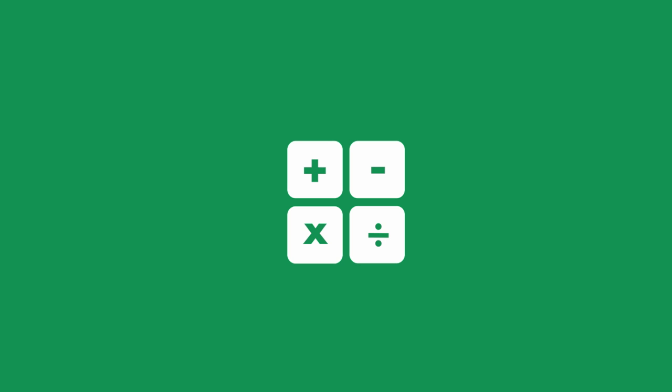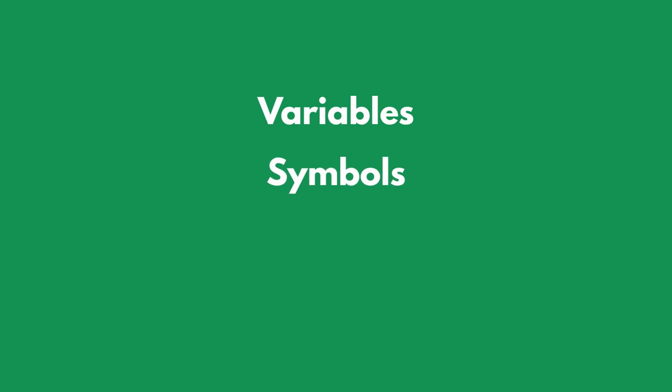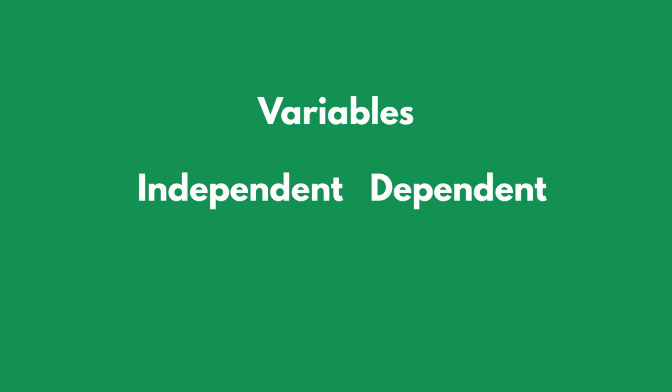In math equations we know variables. They are the symbols, usually letters — x, y, etc. — that represent numbers whose values can change, or variate. Variables are interesting and useful, as they too can either be independent or dependent on other variables.